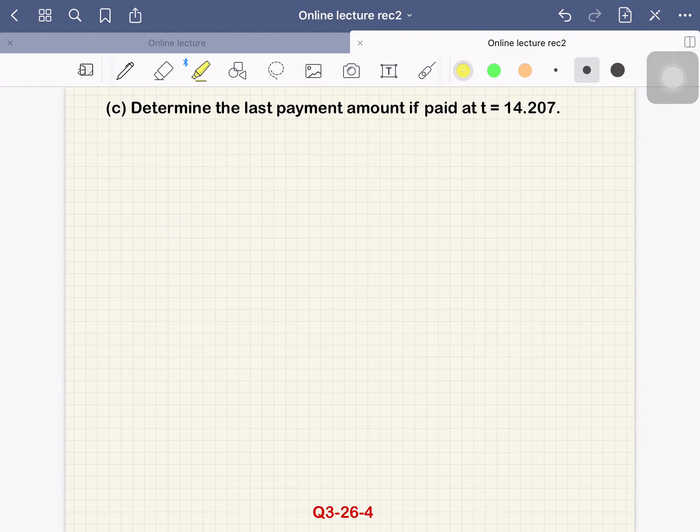Hi everyone. This is continued from the last example. So now we want to determine the last payment amount if we use the third method. That means if paid at t = 14.207.